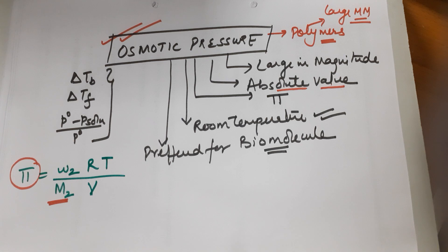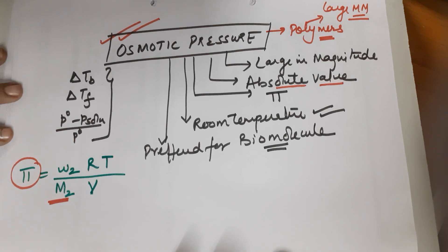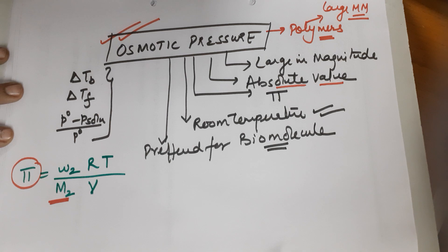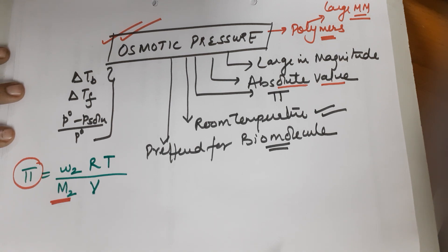To conclude: osmotic pressure is a preferred colligative property because its magnitude is large as an absolute value, it is measured at room temperature making it suitable for temperature-sensitive biomolecules, and it remains measurable even for polymers with large molecular masses. I hope the concept is now better understood. All the best students — do well in life, stay in touch, and like if you enjoyed the teaching. Thanks a ton.